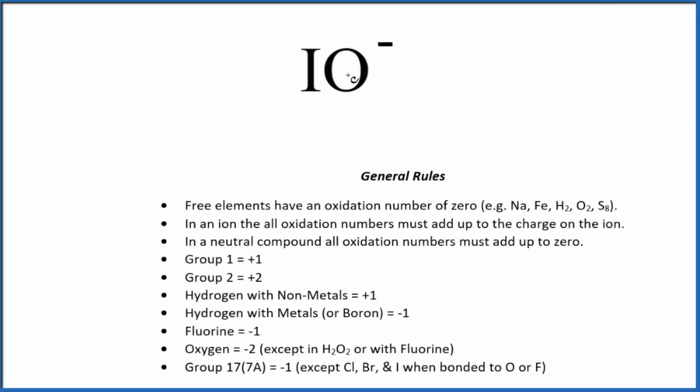Let's take a look at the oxidation states for each element here in IO⁻. This is the hypoiodite ion. It's an ion because it has a negative charge, one minus. So we use these general rules to figure out the oxidation numbers.